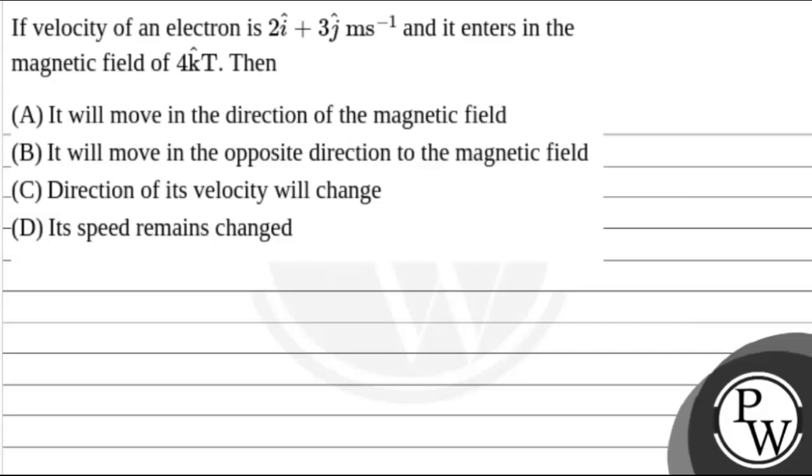Hello, let's read the question. The question says, if the velocity of an electron is 2i-cap plus 3j-cap meter per second and it enters in the magnetic field of 4k-cap tesla, then...